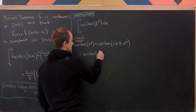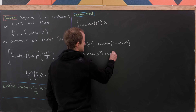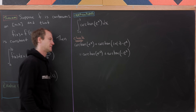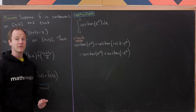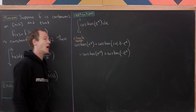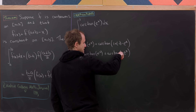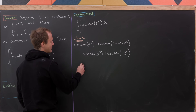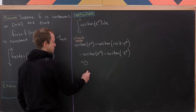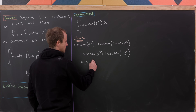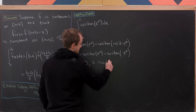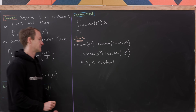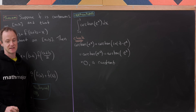That simplifies to arctan(e^x) + arctan(-e^x). Since the inverse tangent is an odd function, we can factor out the minus sign, and those terms cancel down to 0, which is clearly a constant. Our hypothesis is satisfied.